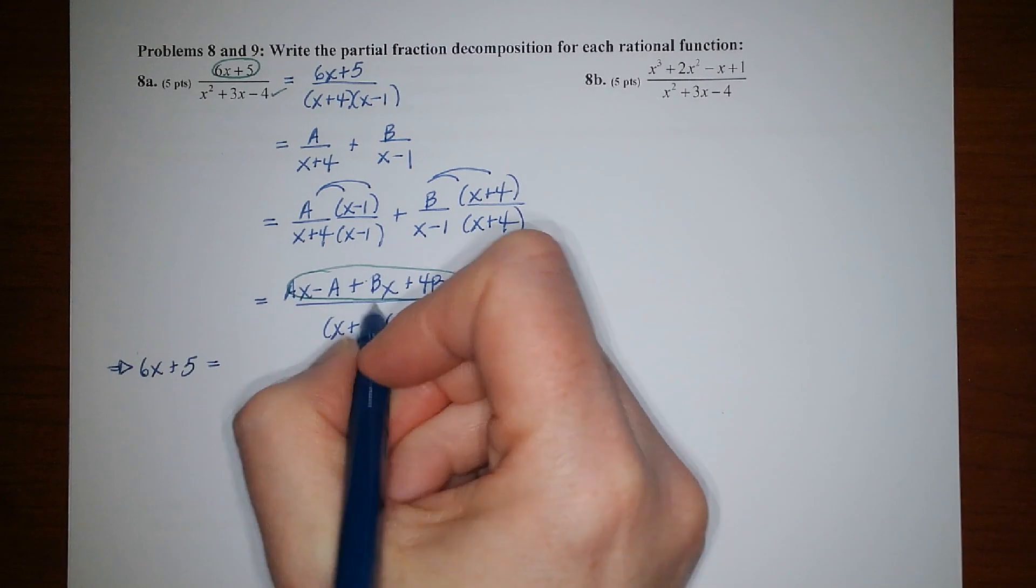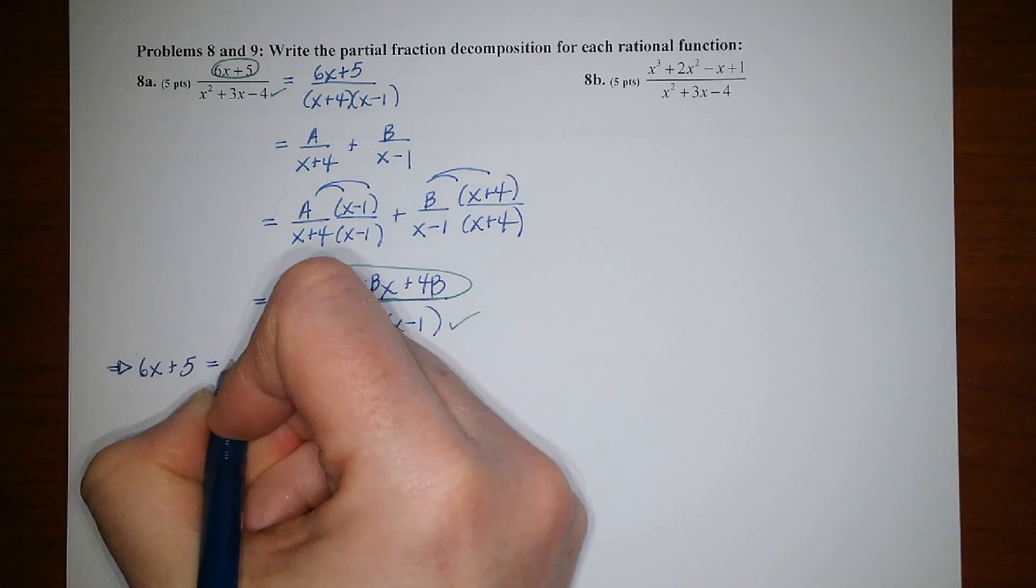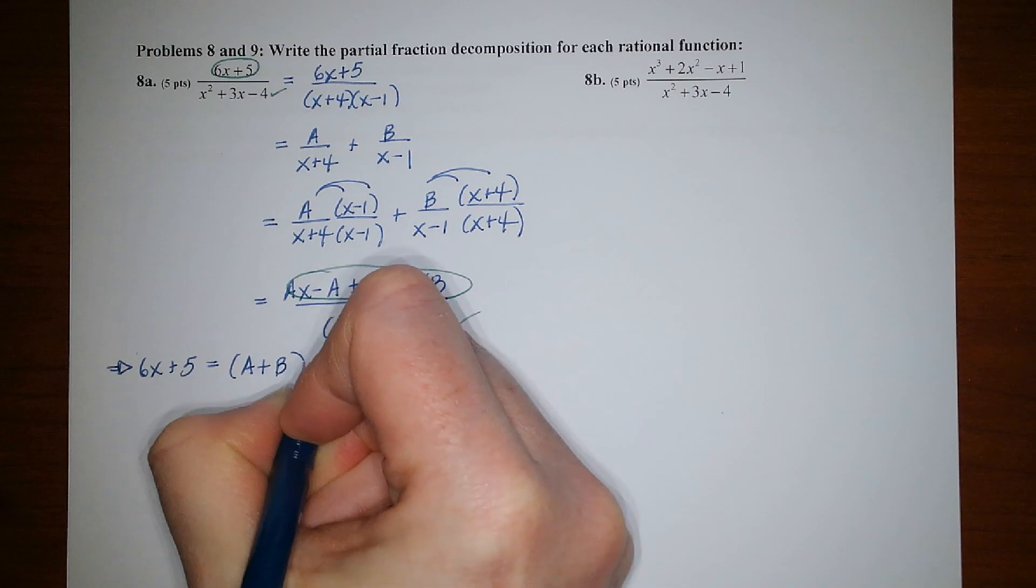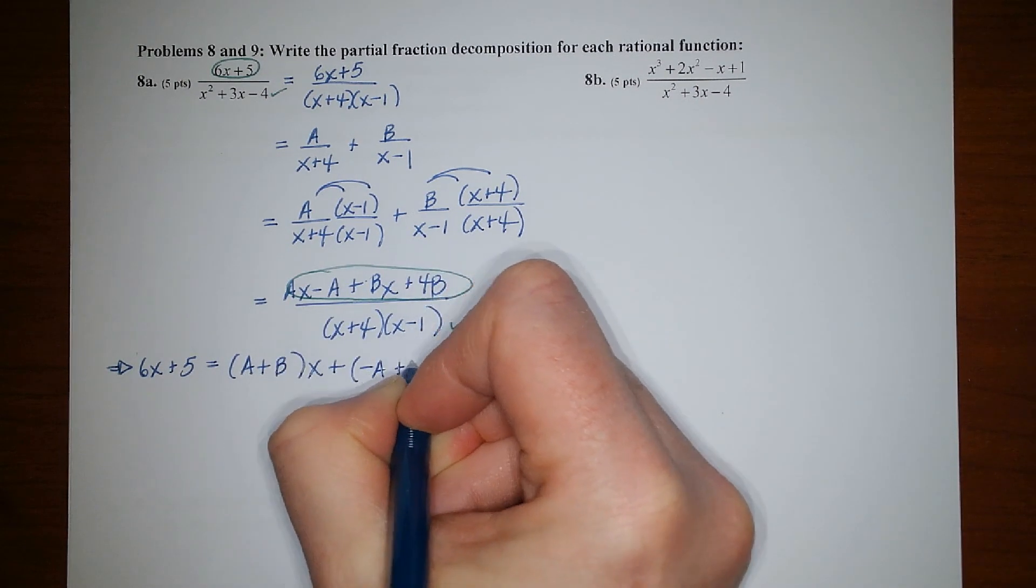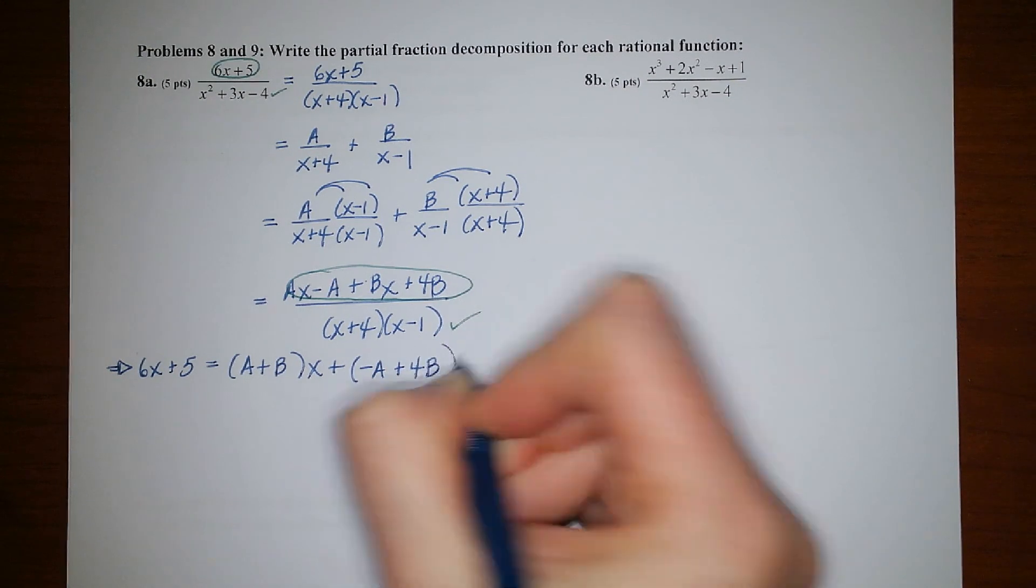So 6x plus 5 would need to equal. Now I'm going to group the x terms together and factor the x out. So I'd have A plus B x's, and then I'm going to group the constants together. That would be the opposite of A and 4B. All right.